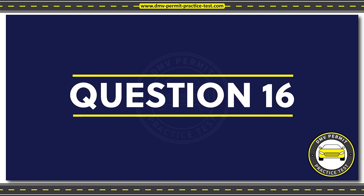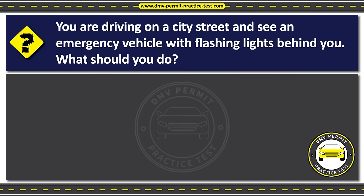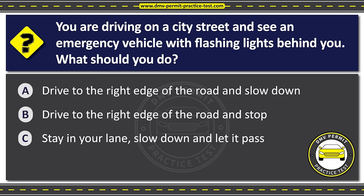Question sixteen. You are driving on a city street and see an emergency vehicle with flashing lights behind you. What should you do? Option A: Drive to the right edge of the road and slow down. Option B: Drive to the right edge of the road and stop. Option C: Stay in your lane, slow down, and let it pass. The correct answer is Option B: Drive to the right edge of the road and stop.